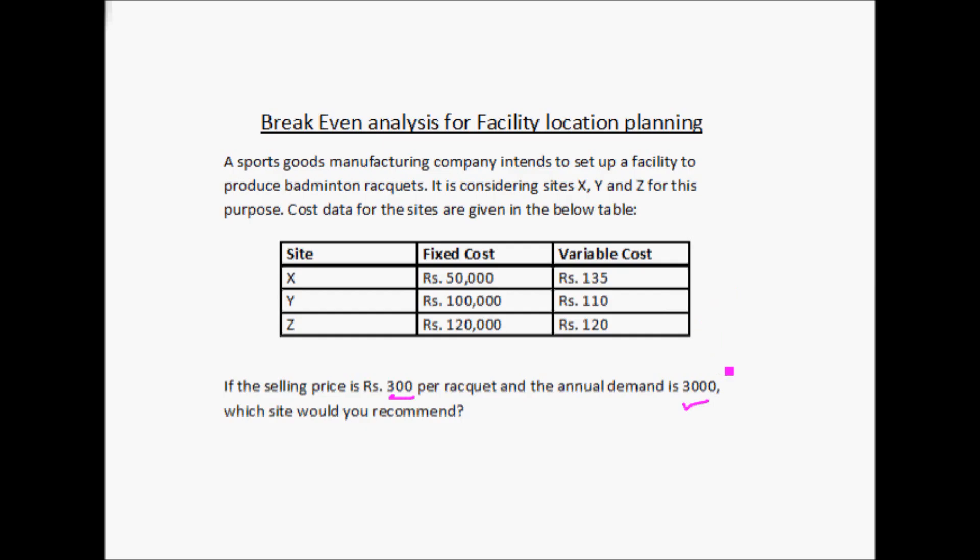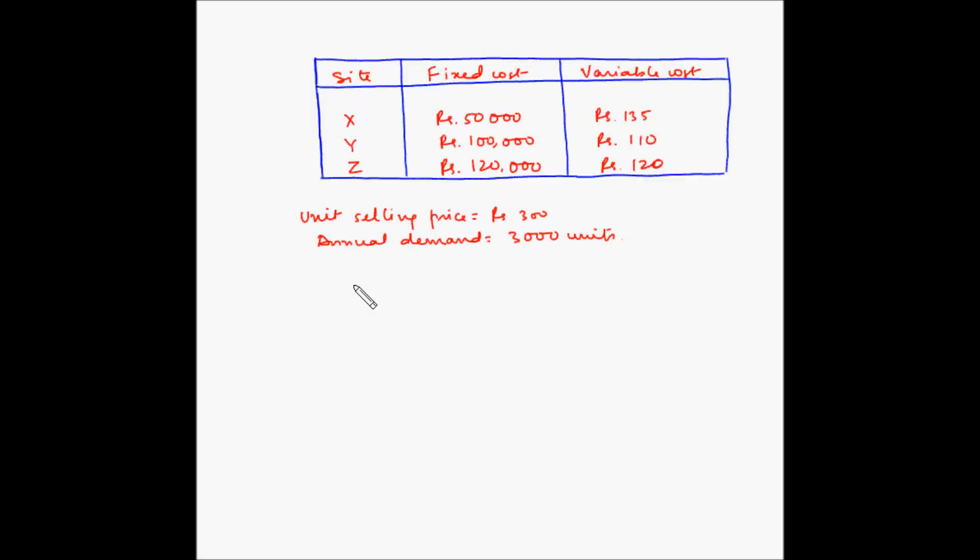So that will give us the total cost, and then if we subtract the total cost for each site from the total selling price, we will get the profit for each of these sites. And the one which is most profitable will be the recommended site. So let us perform these calculations.